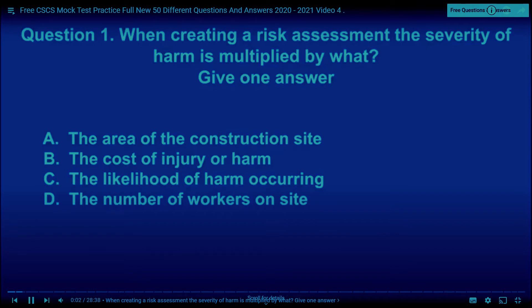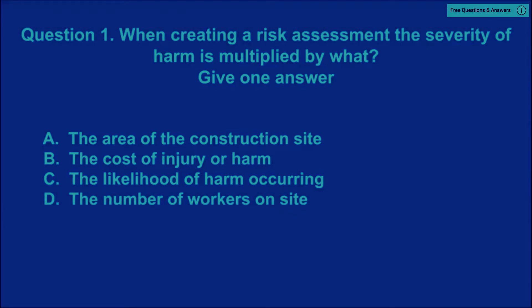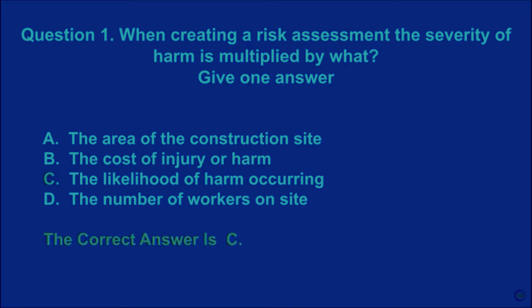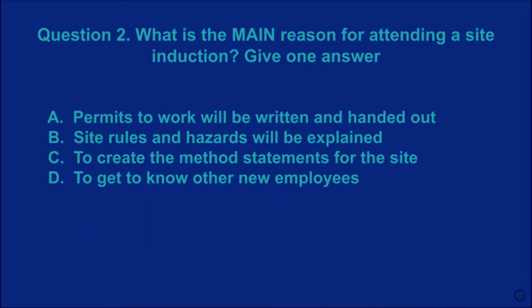Question 1: When creating a risk assessment, the severity of harm is multiplied by what? Give one answer. A: the area of the construction site. B: the cost of injury or harm. C: the likelihood of harm occurring. D: the number of workers on site. The correct answer is C.